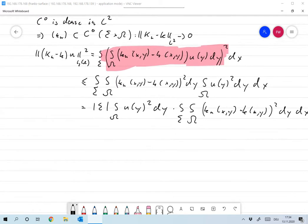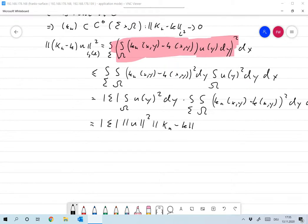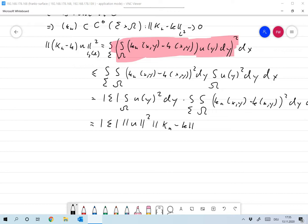Now, and this is the same as the size of sigma times the U norm, the L2 norm of U squared times the norm of K_n minus K. And this is small k and these are small k's, right? K_n minus K. And this is the L2 norm on sigma times omega.